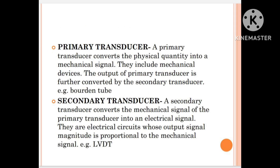Then we have primary and secondary transducers. A primary transducer converts a physical quantity into a mechanical signal — they include mechanical devices. The output of the primary transducer is further converted by the secondary transducer. For example, the Bourdon tube. Similarly, a secondary transducer converts a mechanical signal of the primary transducer into an electrical signal. They are electrical circuits whose output signal magnitude is proportional to the mechanical signal. For example, LVDT.